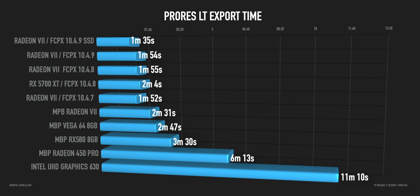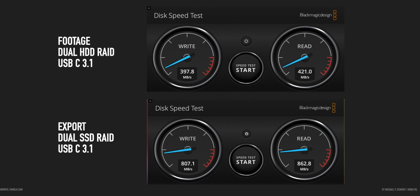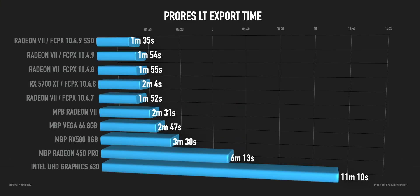I also tested with 10.4.9: I exported or copied the test timeline to a new library and put it on an SSD. From one minute and 54 seconds, just by having that library on a fast SSD — 750 to 820 MB/s read/write — instead of a RAID 0 of two drives at 250 to 300 MB/s, I got the export time down to one minute and 35 seconds. That's about 20 seconds saved, which makes a real difference on a big project. But otherwise Final Cut 10.4.9 doesn't improve export time.